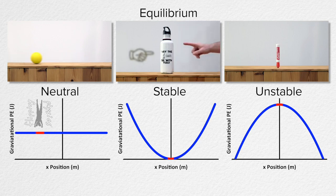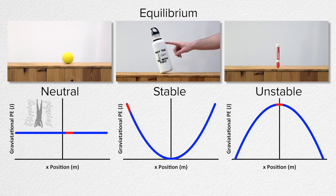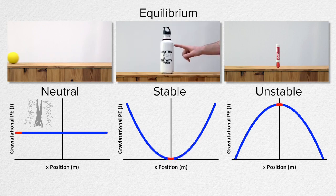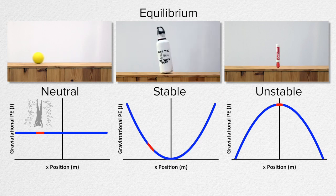This water bottle is in stable equilibrium because its gravitational potential energy increases as its position moves away from the equilibrium position. This is because the center of mass of the water bottle goes up as the position goes away from equilibrium. In other words, the water bottle naturally returns back to the equilibrium position when it loses gravitational potential energy.